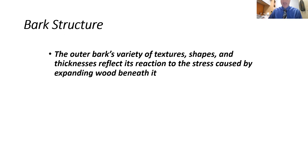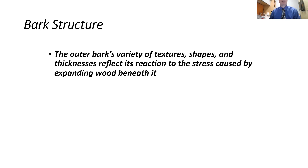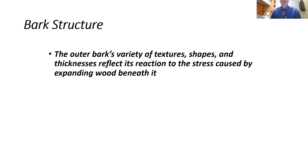Now let's get into bark. The outer bark consists of dead cells on the outside of a tree that form the armor to protect it. We generally don't want to hit trees with a mower or damage them during logging operations, because if you get down to the cambium layer, you could injure the tree or it may succumb to disease or insect infestation. Bark provides that armor but also comes in a variety of sizes, shapes, colors, and textures.